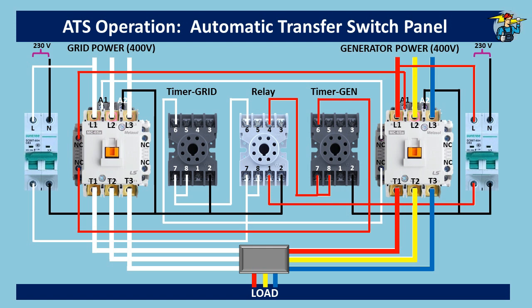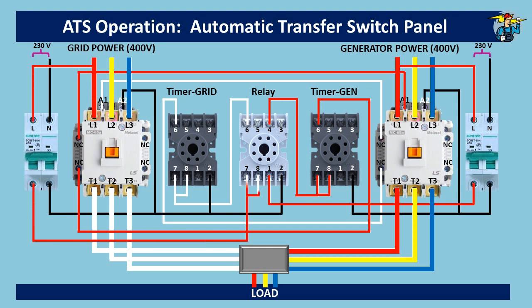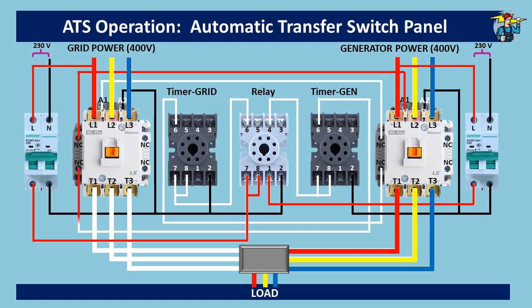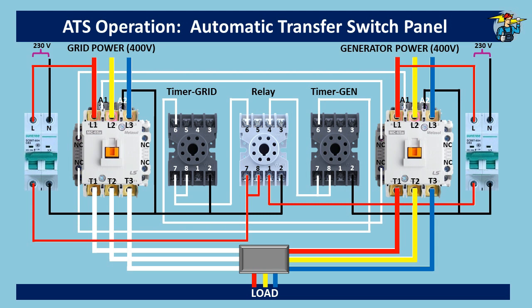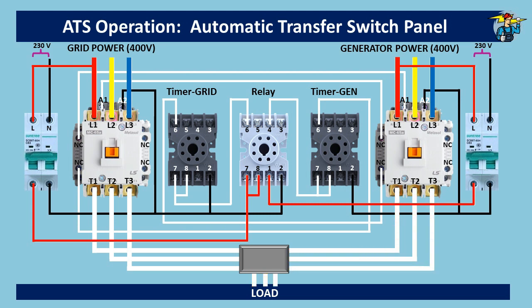The load runs on generator power until grid power is restored. When grid power comes back, the relay gets power through port 7, and the normally closed connection between ports 1 and 4 opens up. This stops power to the generator timer. With the generator timer de-energized, A1 of the generator contactor does not get power, stopping generator power to the load.